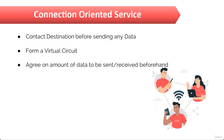During this initial handshake, the two TCP processes also agree on the amount of information that will be sent in either direction before the respective recipient's TCP sends back an acknowledgement. So before actually transmitting the data, both the source and the destination agree on a certain amount of data that is to be sent and received.